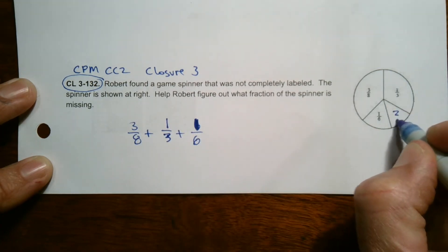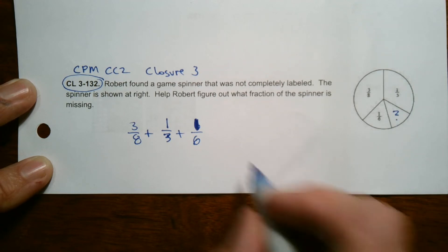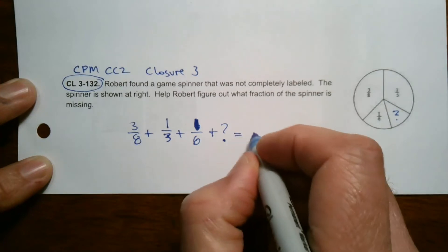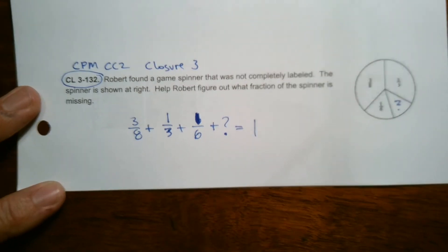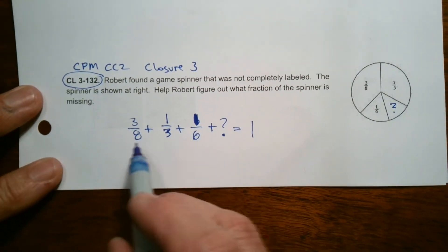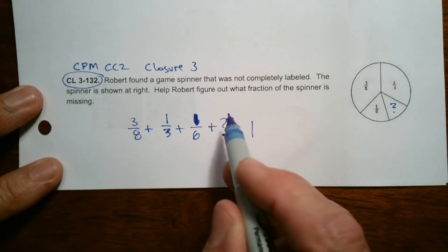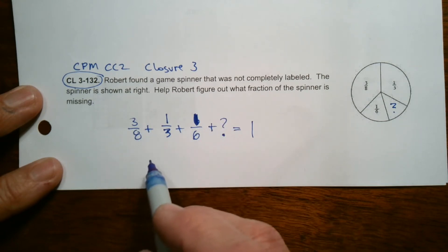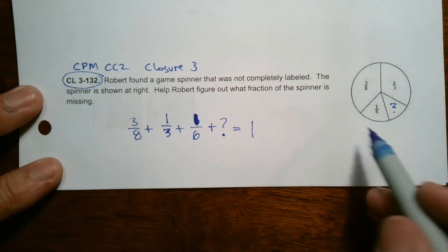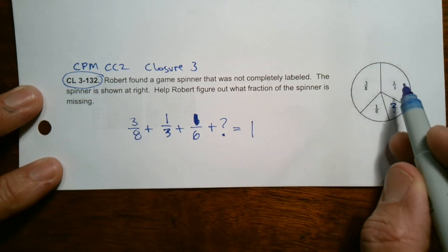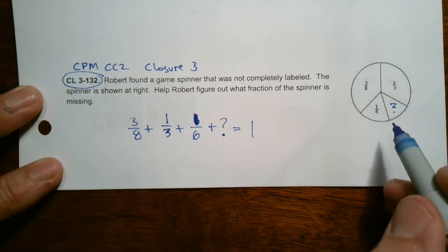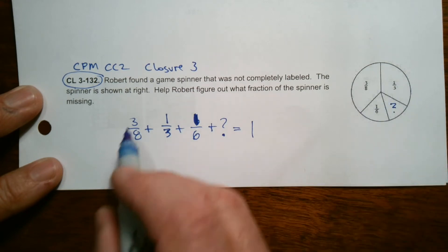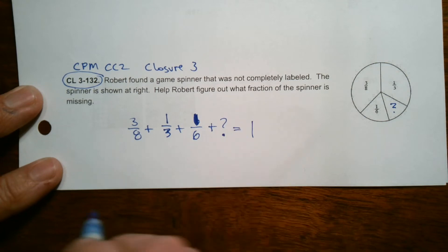And this here is my question mark. It's my unknown. So plus that unknown equals 1. That's what I know. Now, if I'm adding fractions and I want to figure out what this is, the way I would add fractions is to get a common denominator. And having that common denominator allows me to put these all in the same parts, right? Divide them into the equal parts so I can see what that missing part really is.